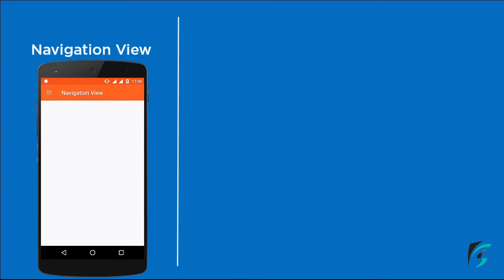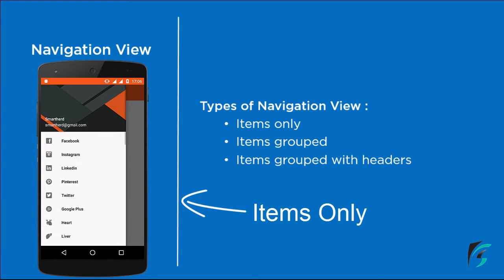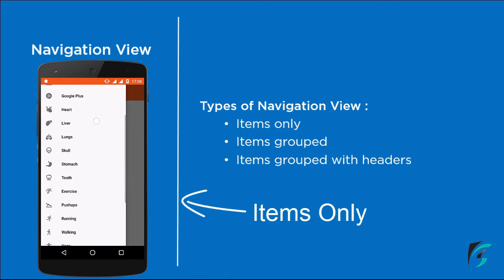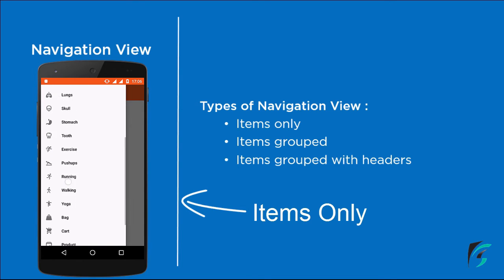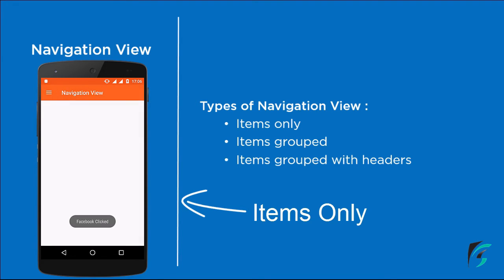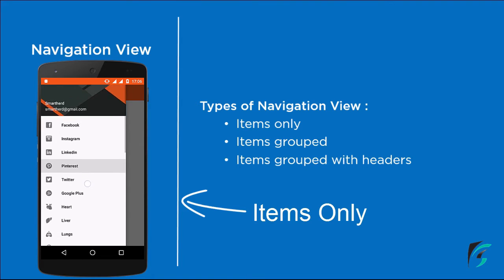Here we will see the demo of the application that we will be designing while learning Navigation View. The types of the Navigation View are: Items Only, Items Grouped, and Items Grouped with Header. On the left side of the screen, you can see the Items Only Navigation View, where the menu items are simply displayed — they are plain and there is no separation or grouping of the items.